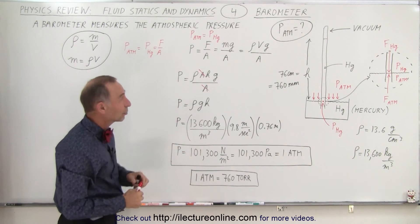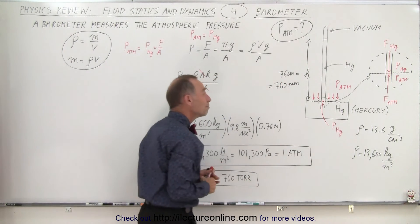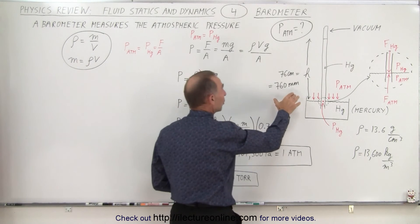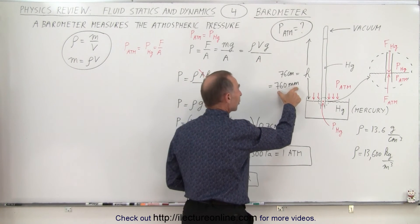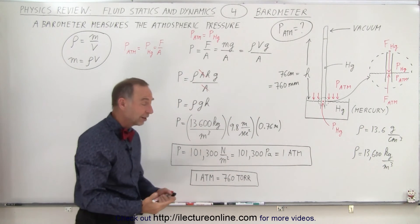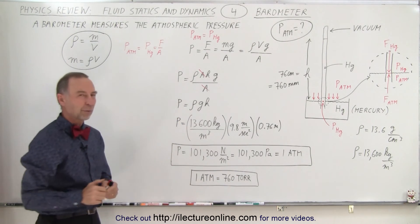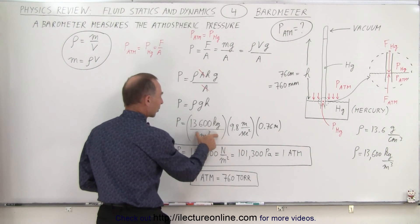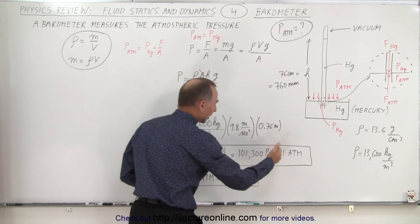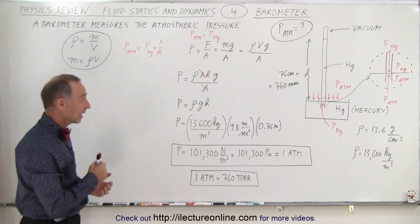Now when Torricelli measured the height, it turned out to be 76 centimeters or 760 millimeters. And so because of that, they claimed that atmospheric pressure was equal to the column height of mercury of 760 millimeters, which they called torr after Torricelli. So the atmospheric pressure was 760 torr. But of course, if we put standard units in there, we have the density of mercury, the acceleration due to gravity, the height of the column in meters, and we end up with the atmospheric pressure being about 101,300 pascals.